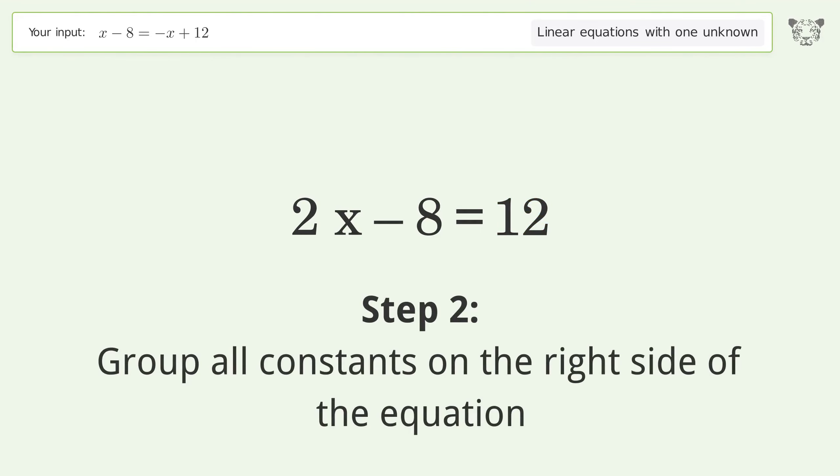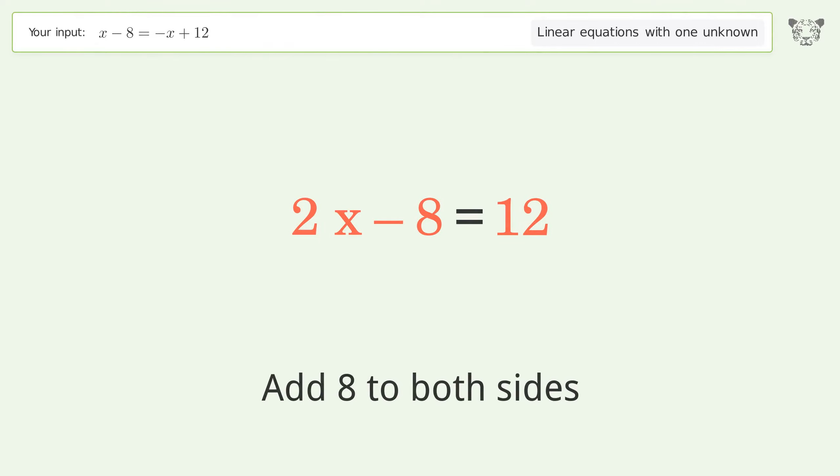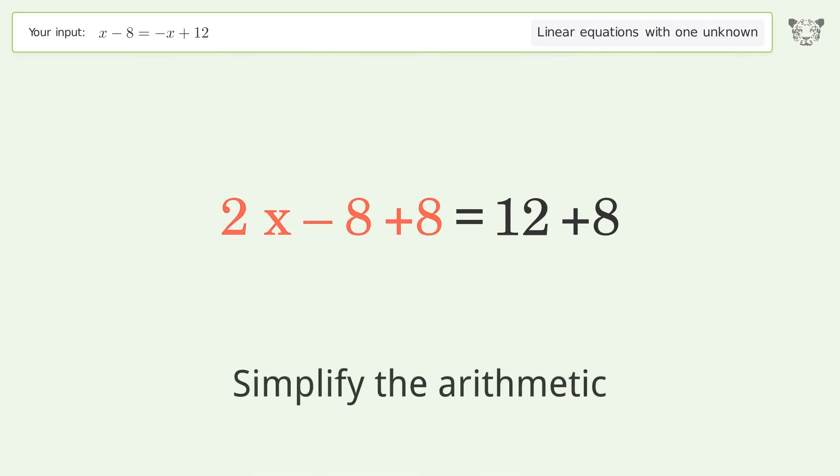Group all constants on the right side of the equation. Add 8 to both sides. Simplify the arithmetic.